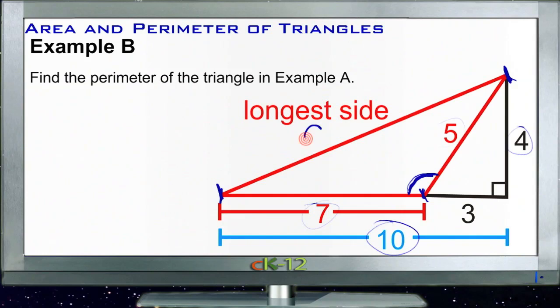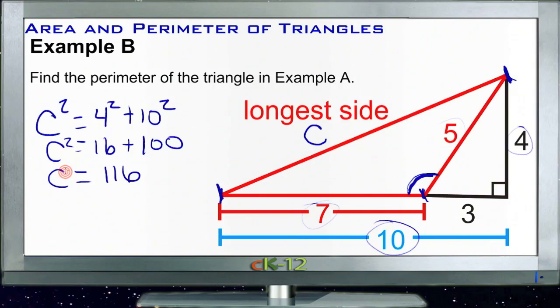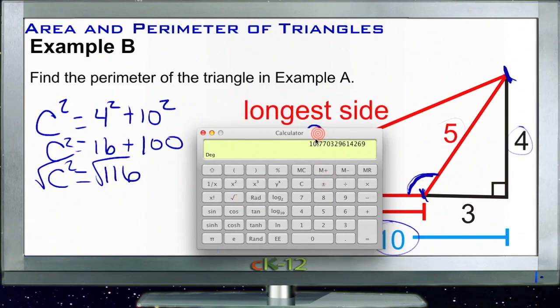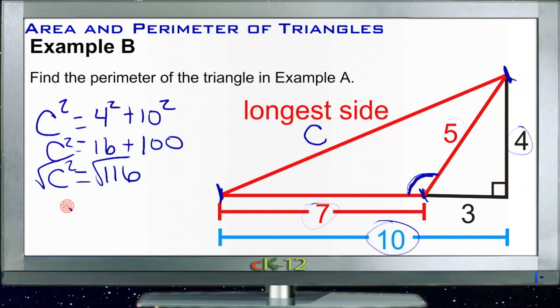So we're going to have our longest side, which we usually call side c. We're going to have c squared equals four squared plus ten squared. Well ten squared is a hundred, and four squared is sixteen. So c squared equals one hundred and sixteen. That means that c is going to be the square root of one hundred and sixteen. One sixteen, square root, about ten and three quarters. So c then is about ten point seven five approximately.